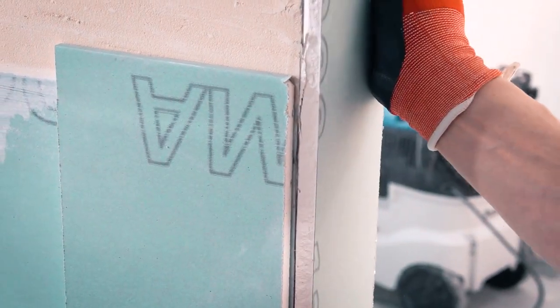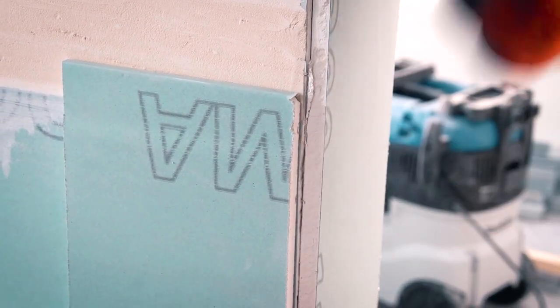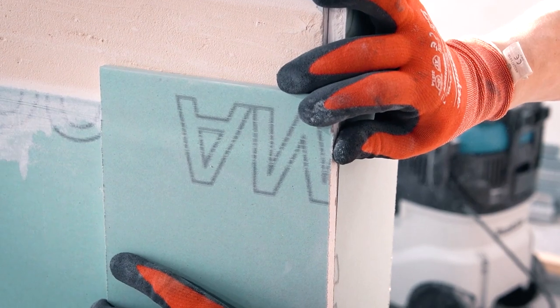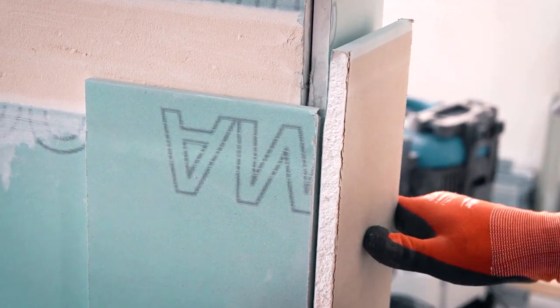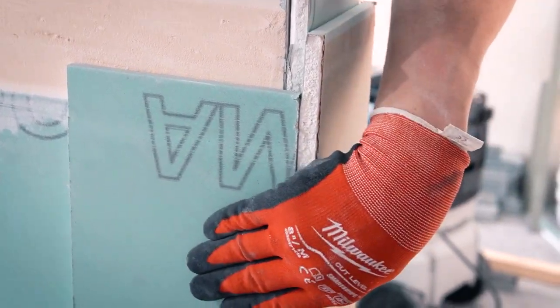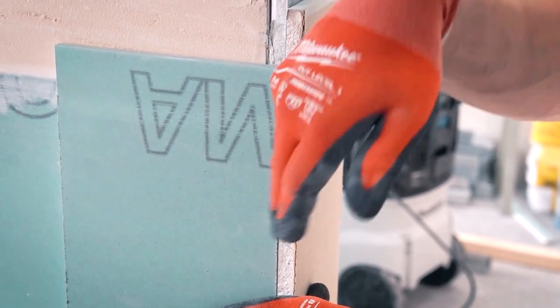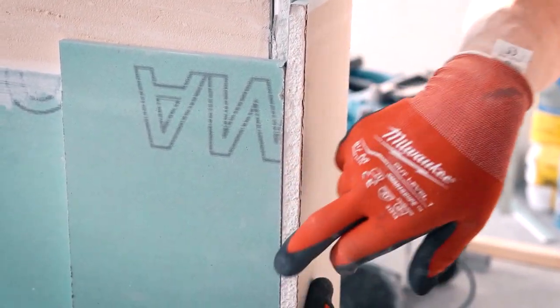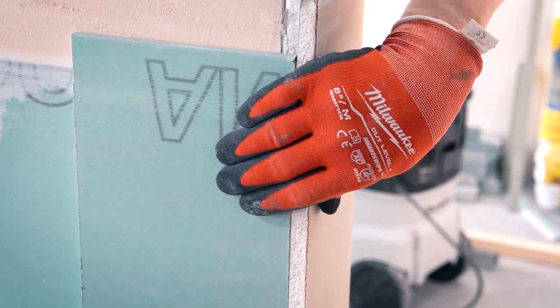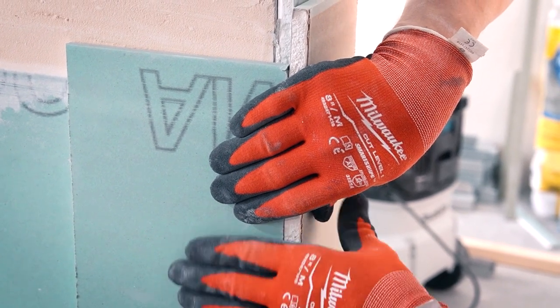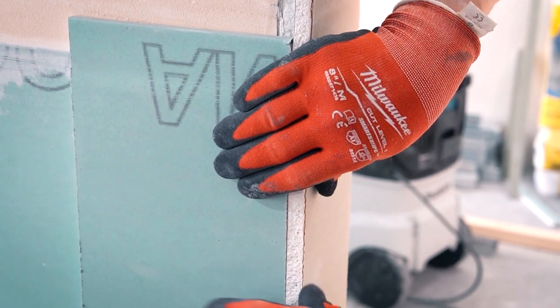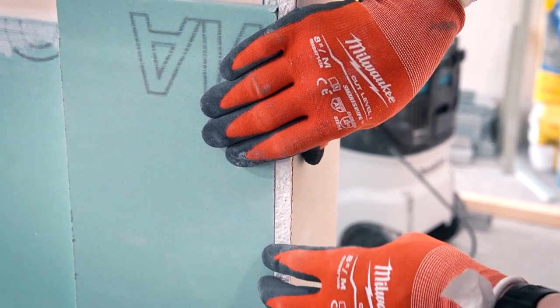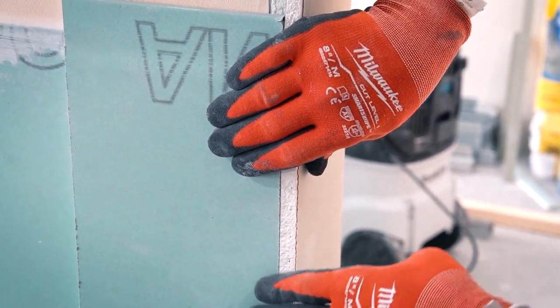So instead we assemble it a bit differently. First we put a sheet here, and then we cover it up with this one, and then we put another one right here to close it off. This way they're in a staggered pattern and it's much easier later for the painter to come in and do all the finishing work without having to worry about any cracks.